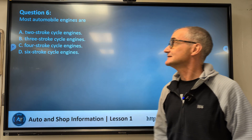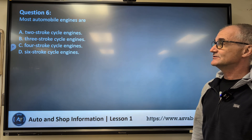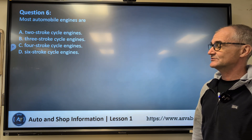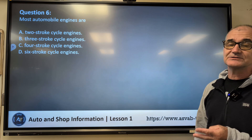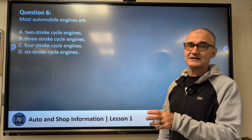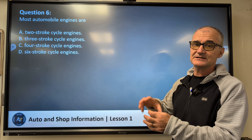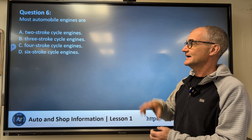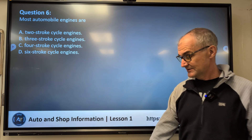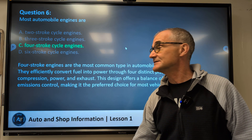Question number six: Most automobile engines are — two stroke, three stroke, four stroke, or six stroke? There are really only two types of engines: a two-stroke, like on a lot of dirt bikes, where the compression and exhaust are in a single stroke; and a four-stroke, like all vehicles. So the correct answer is C — four-stroke engine.